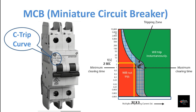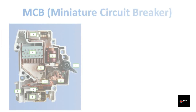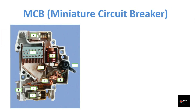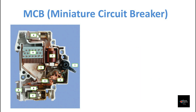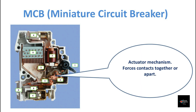Now let us see the internals of an MCB and its operation. This is how an MCB looks when it is opened. Let's look into each and every part. The actuator lever manually trips or resets the breaker. The actuator mechanism is the part that forces contacts together or apart.